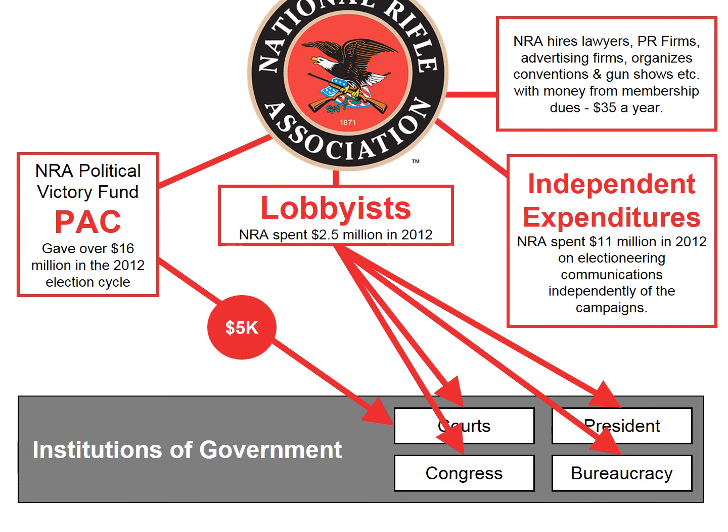They also spent $11 million on electioneering communications independently of the campaign. They spent money through super PACs and things of that nature to create their own independent campaign ads. All of this money is spent in an attempt to influence our institutions of government and public policy — some of it on the courts, much of it on Congress and the President, and in the bureaucracy — literally all of our institutions of government.